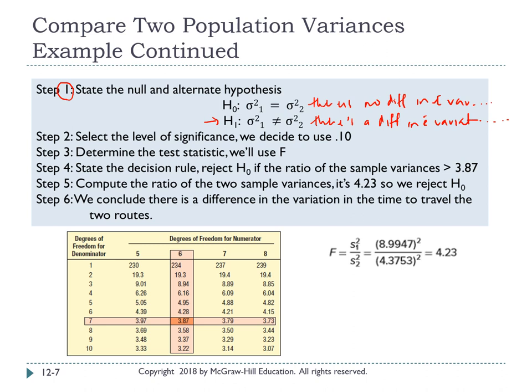Step two: select our alpha. In this case we choose 0.10. Step three: compute the test statistic using the F statistic, which we computed in the previous slide. You should get the value of F equals 4.23.